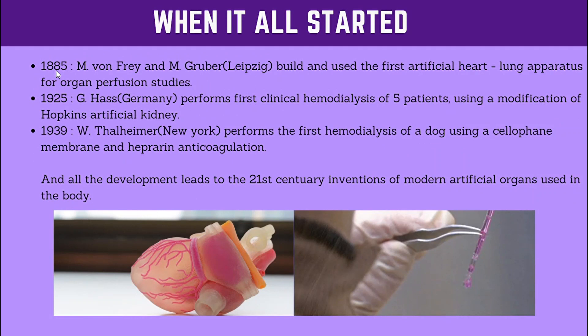Let's see when it all started — that's 1885. Since then, artificial organs have been developed by many scientists and engineers. In 1885, M. Bonfrey and M. Grubber of Leipzig built the first artificial heart-lung apparatus for organ perfusion studies. Organ perfusion is the study of blood flow in our body. To study that blood flow, these two scientists built the first artificial heart-lung apparatus.